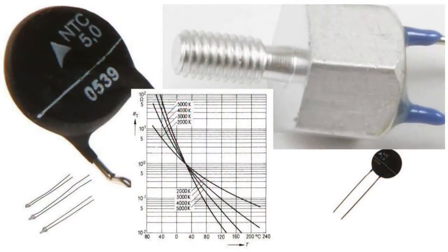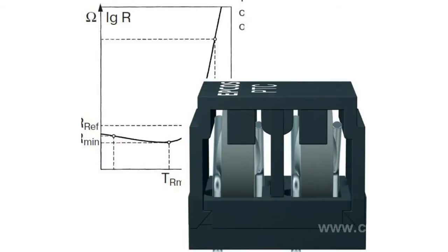The word thermistor means a thermal resistor — a device the resistance of which changes depending on the temperature. Thermistors are non-linear devices with parameters that hugely differ. There exist two main thermistor types: thermistors with a negative temperature coefficient and those with a positive one.